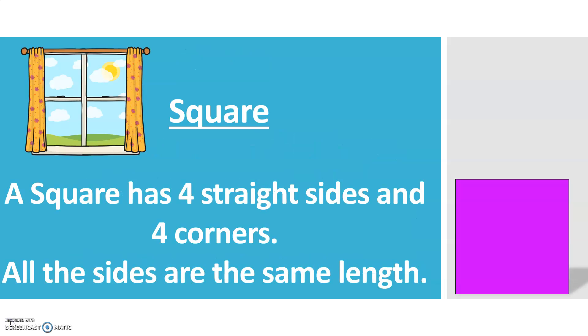A square. A square has four straight sides and four corners. All the sides are the same length. An example of a square might be a chessboard or a window.